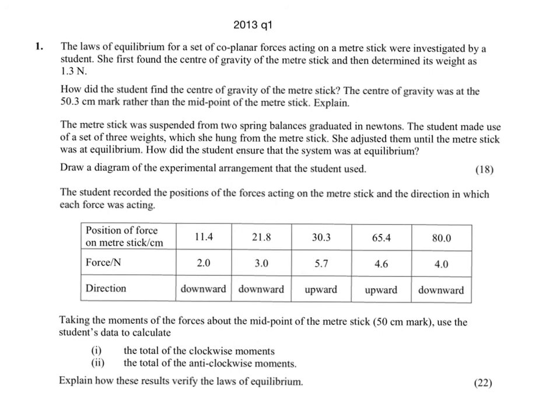This is an exam question from 2013 — there was another similar one in 2014, which proves experiments can repeat themselves. You need to be aware of all the experiments, particularly those that haven't come up for a long time and those from last year. You must address both forces up and down, and the moments left and right, and say how you found the centre of gravity by balancing on your finger, and the mass of the metre stick using a digital scale.